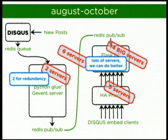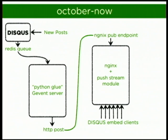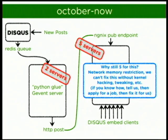We needed two servers in the backend for redundancy, but we thought we could do better on the front-end server count. We came across the Nginx push stream module, which enabled us to replace the Redis pub/sub, the Flask servers, and the HAProxy cluster with just this one Nginx module. We weren't using all of Redis's features — just pub/sub — and this module had that internally. That got us down to just five servers on the front-end cluster.